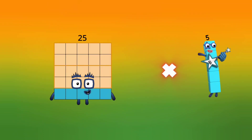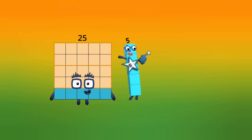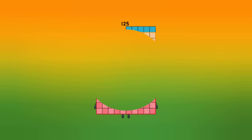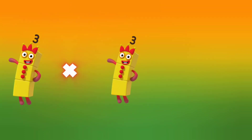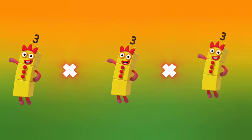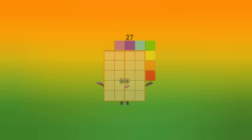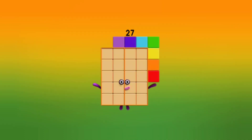5 into 5 into 5 — let's multiply: 5 into 5 is 25, let's multiply 5 is 125. 3 into 3 into 3 — let's multiply: 3 into 3 is 9, into 3 is 27.